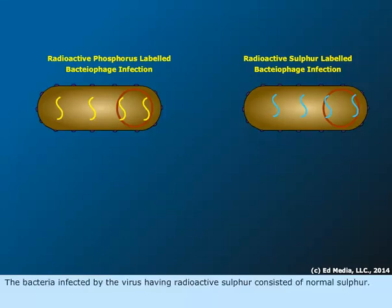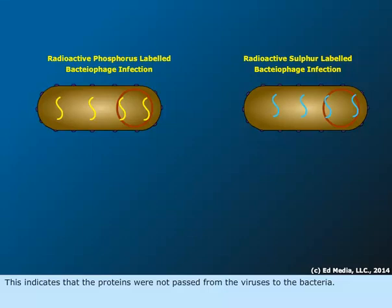The bacteria infected by the virus having radioactive sulfur consisted of normal sulfur. This indicates that the proteins were not passed from the viruses to the bacteria.